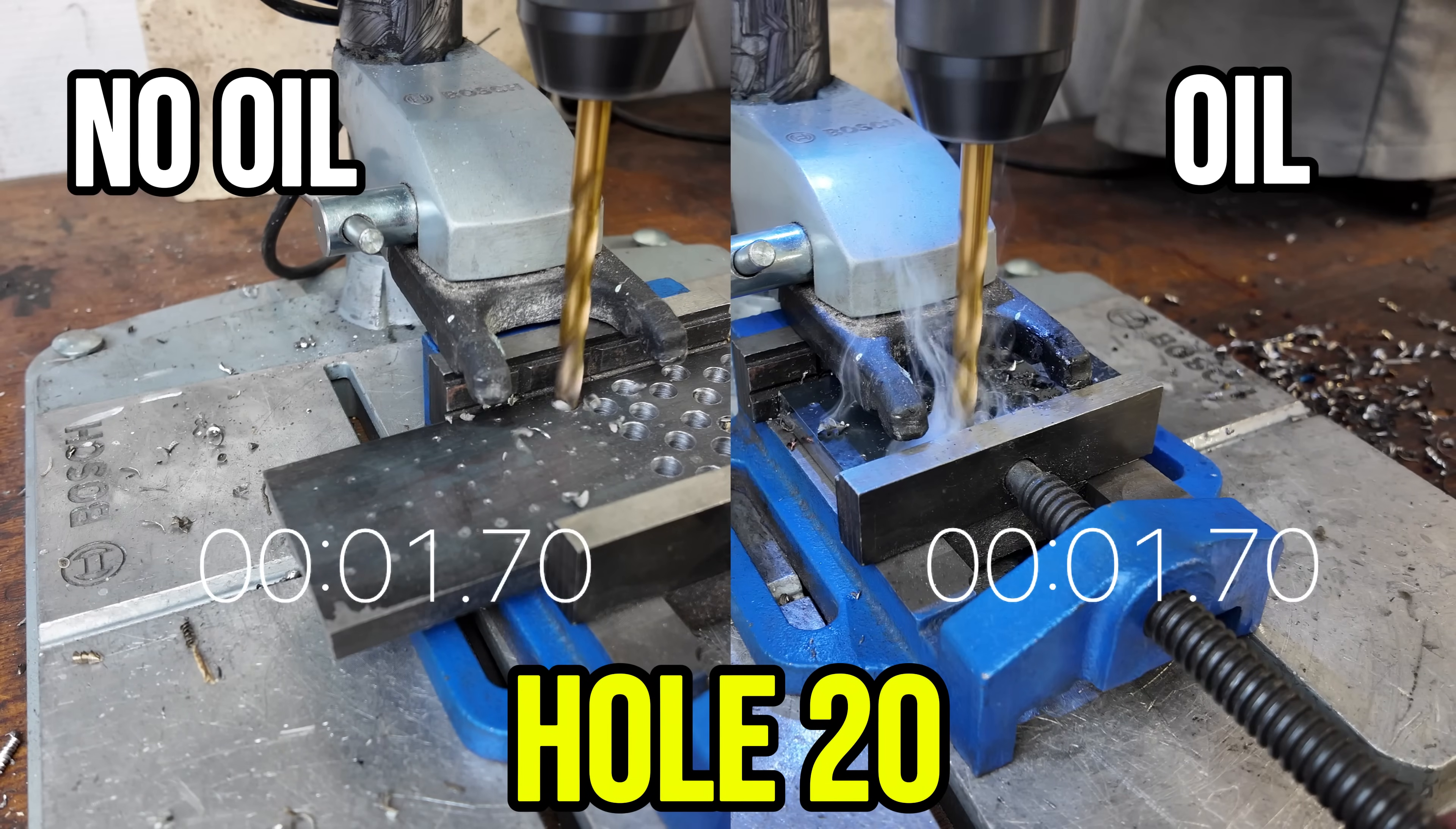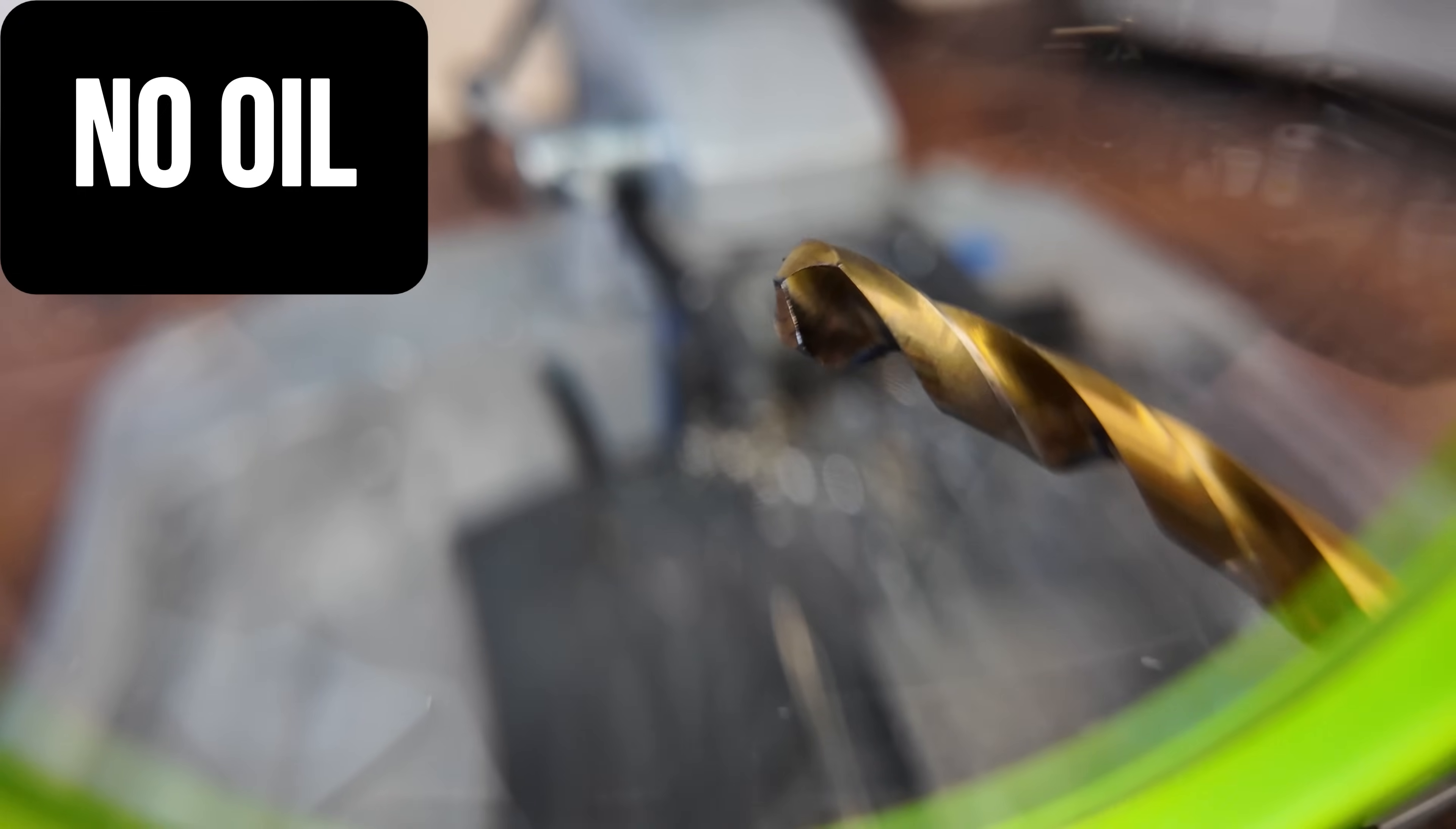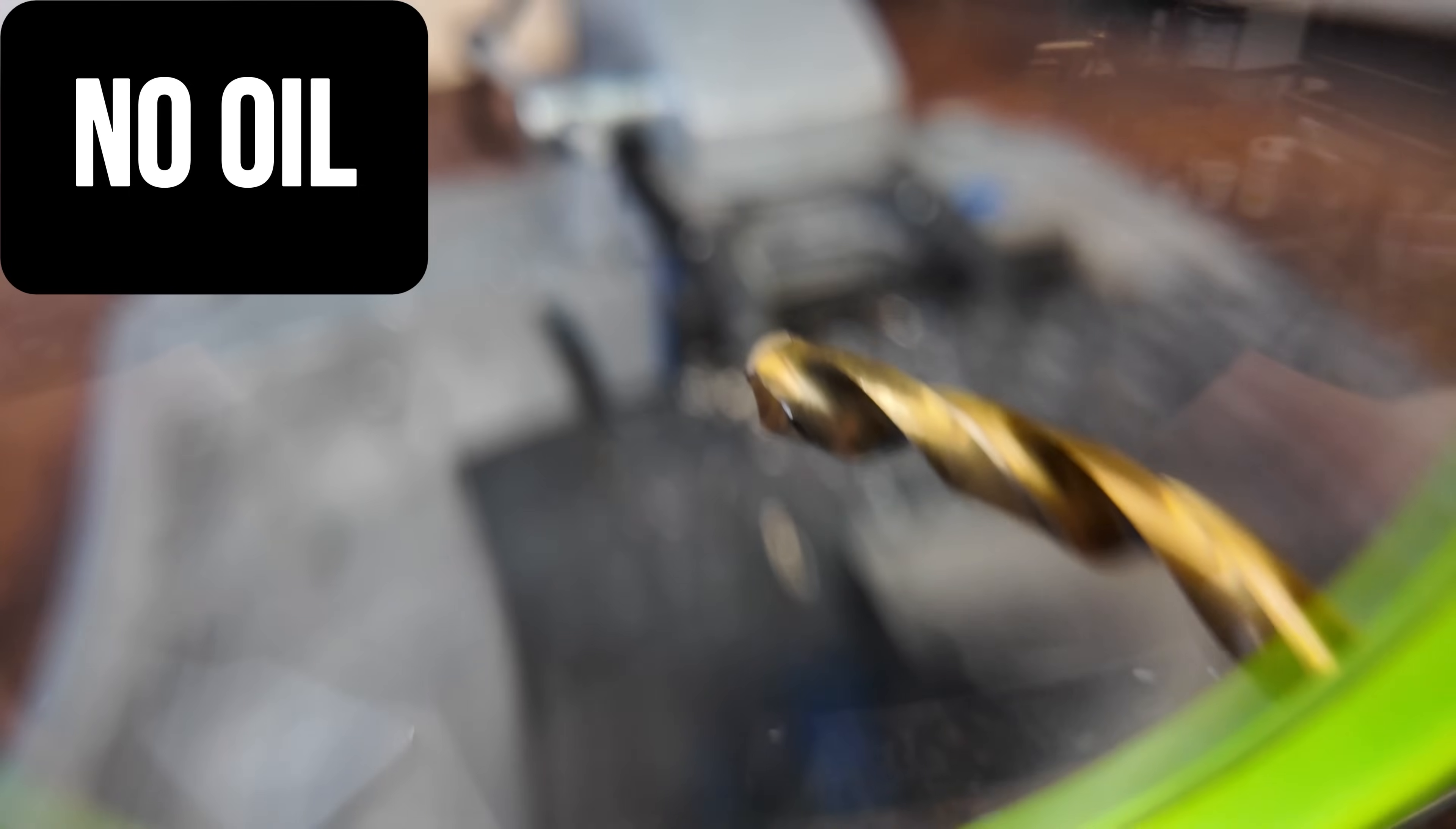After 20 holes without oil, this is a real stress test. Of course it is dulling a lot. It feels more dull in the hand when you push the drill press. You can see the chips are different colored - there is higher friction which causes blue discoloration. You don't get the spiral, nice-looking chips, but it is still cutting at a decent speed.